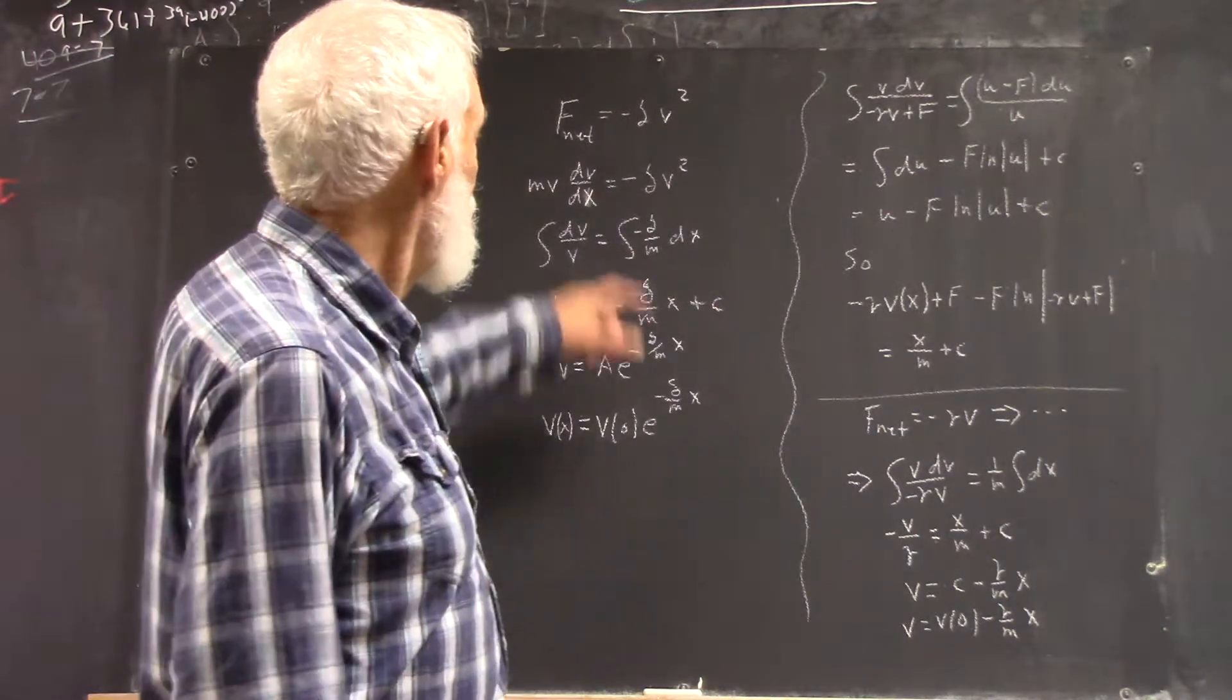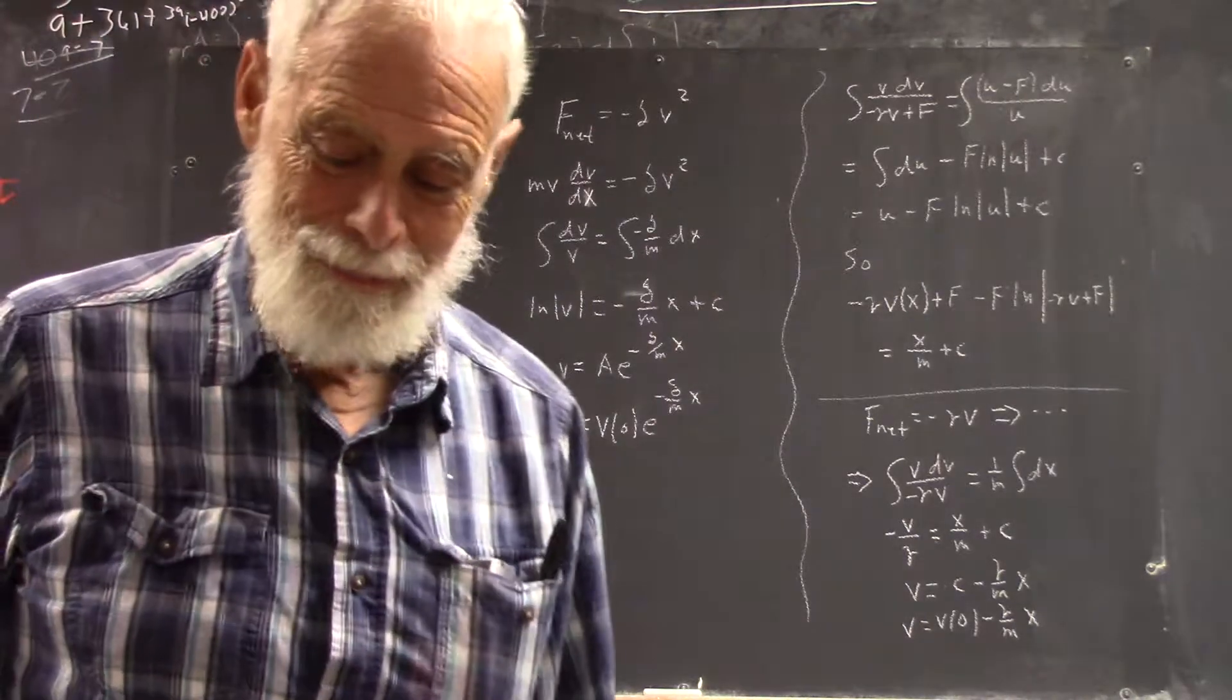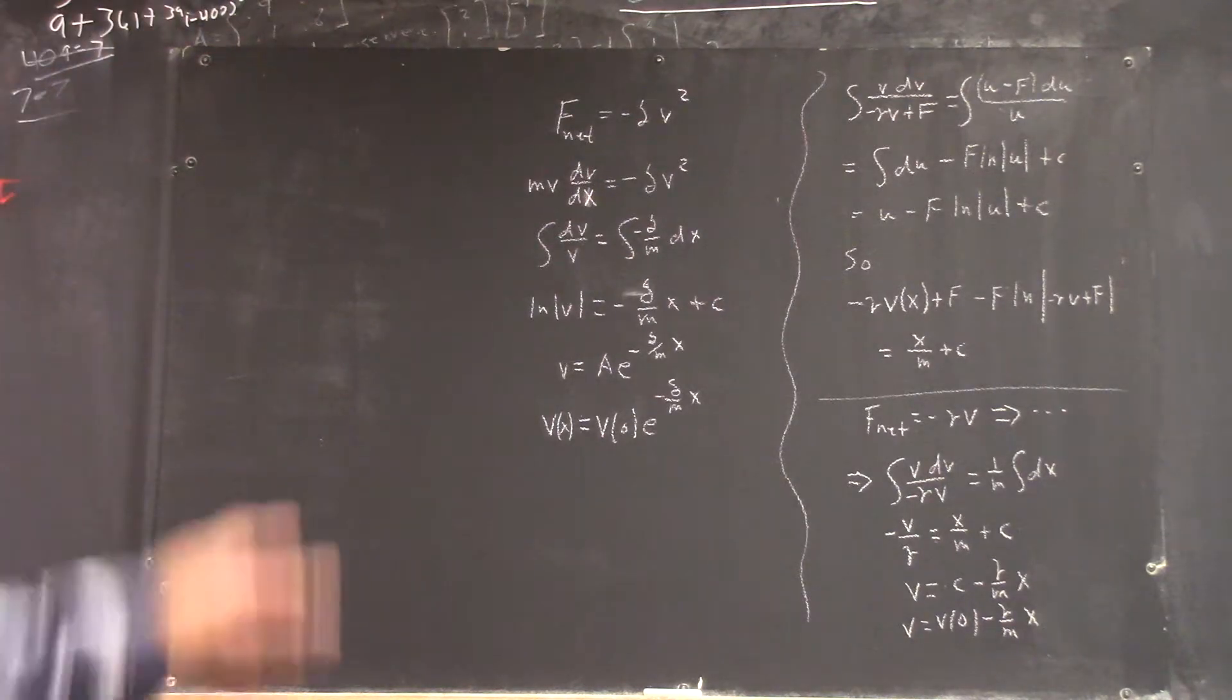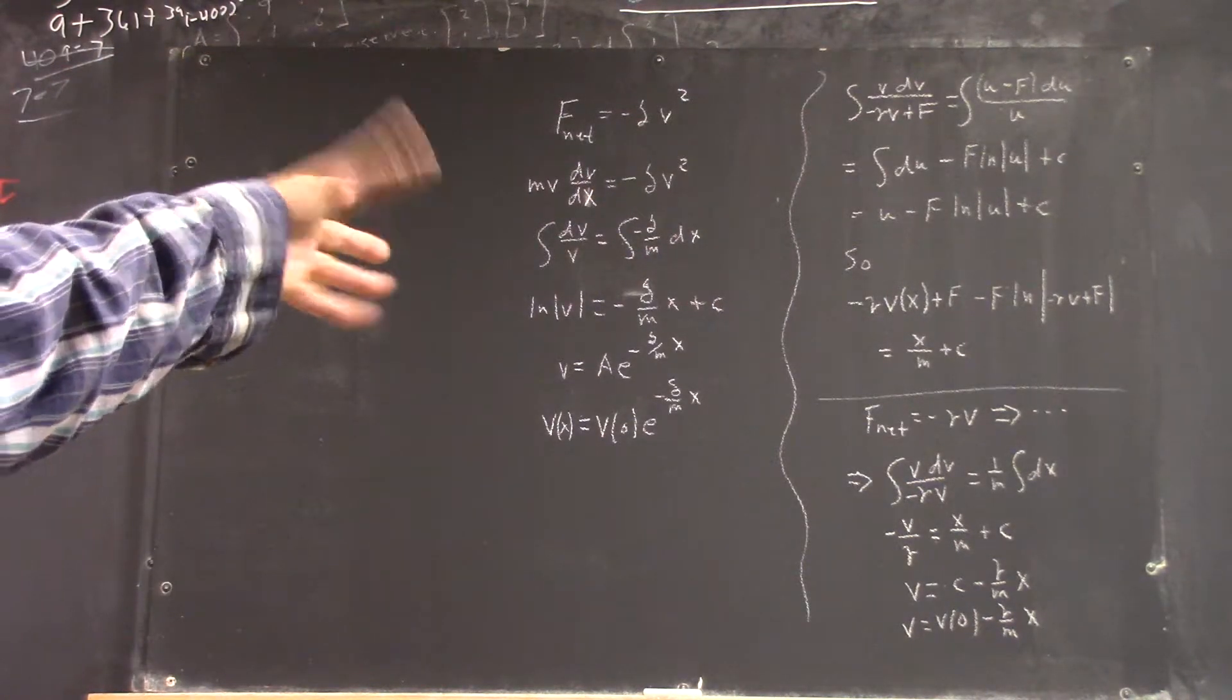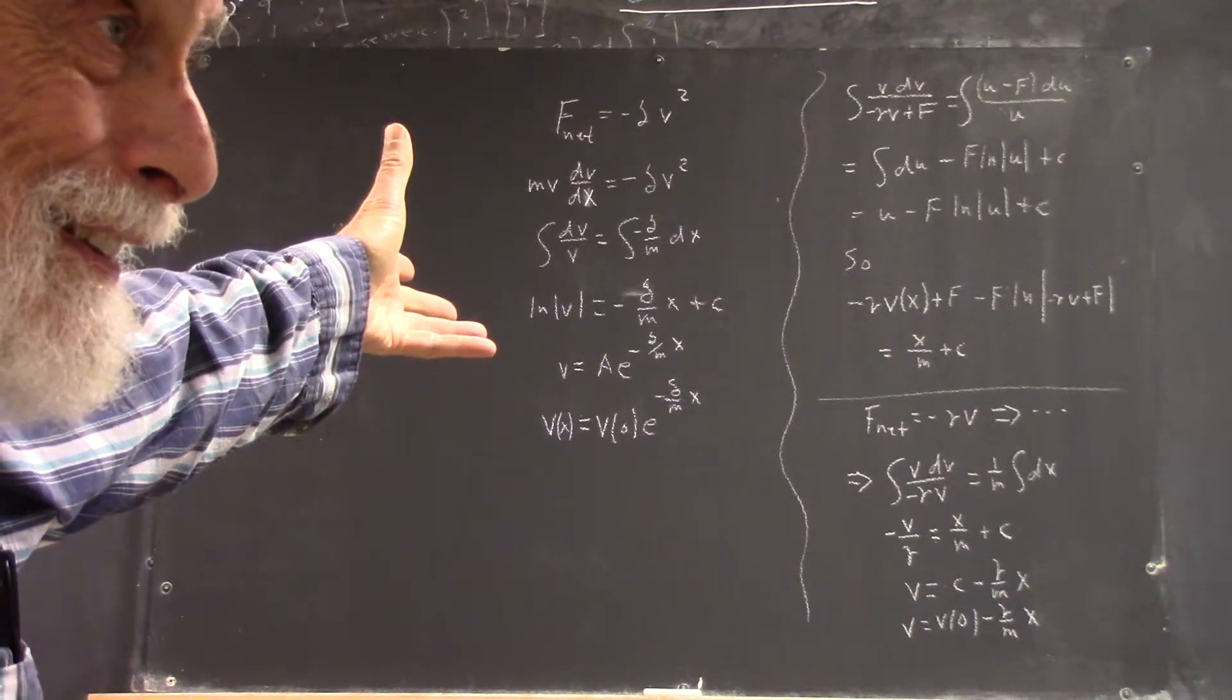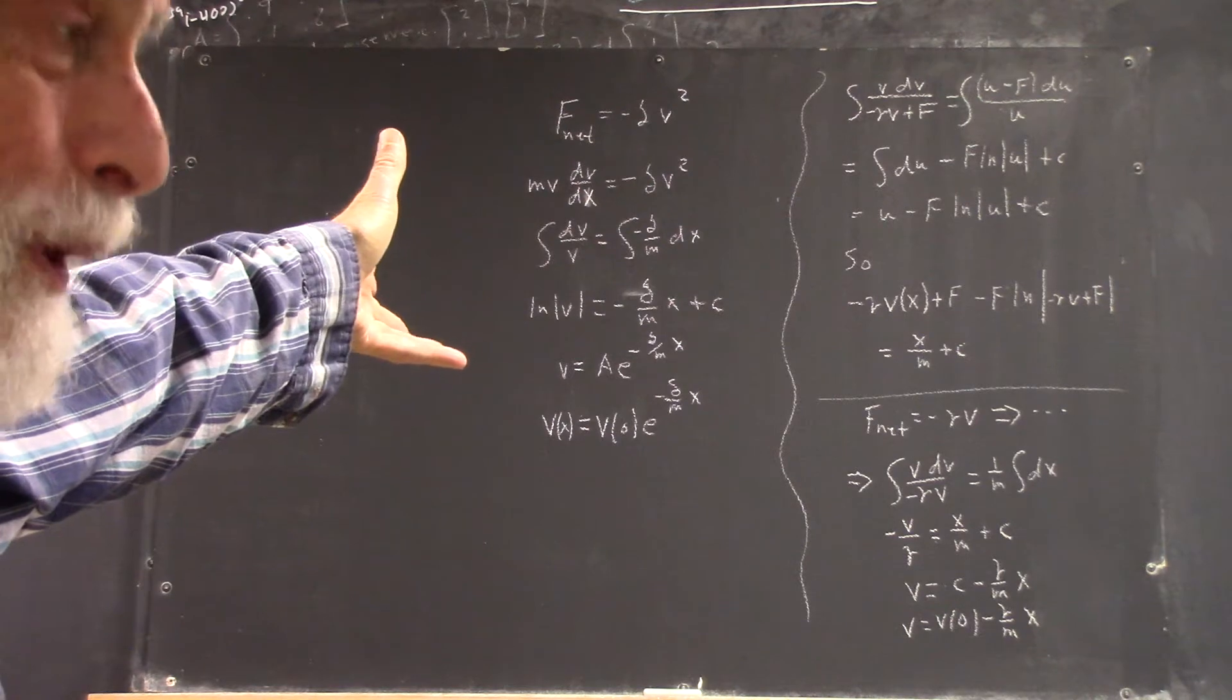Although, still understanding this mv dv/dx thing. You know, I mean, you have to accept it by the chain rule, but what does that mean? Why is it what it is?